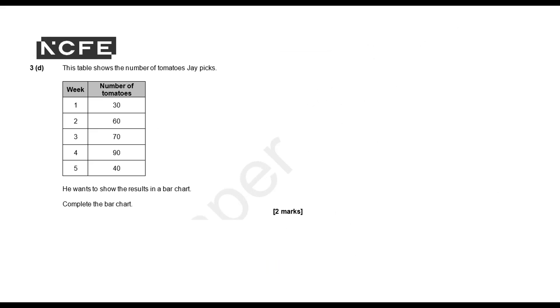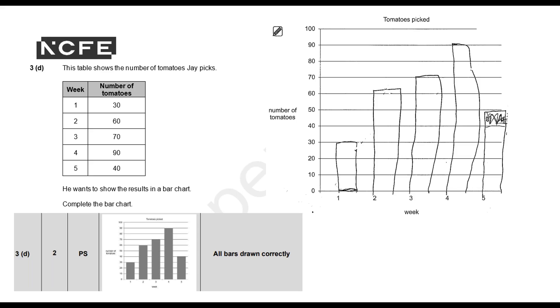3D: This table shows the number of tomatoes Jay picks. He wants to show the results in a bar chart. Complete the bar chart. And this is our learner's response. You can pause the recording to decide how many marks you would give.